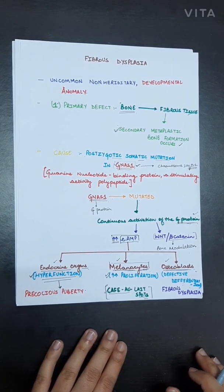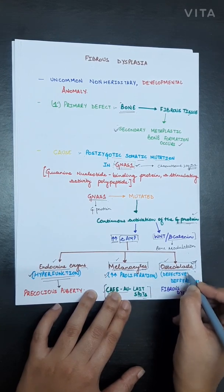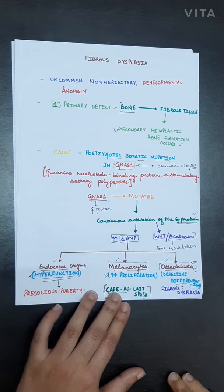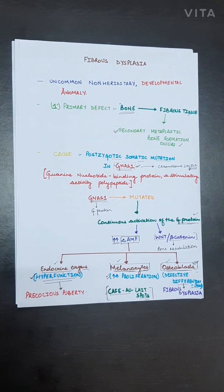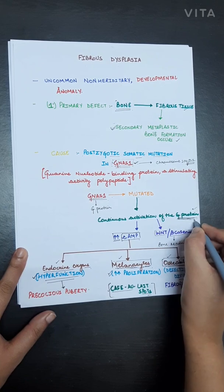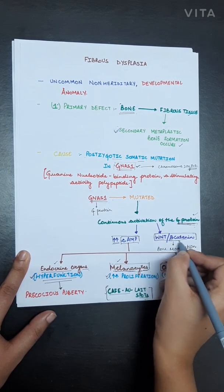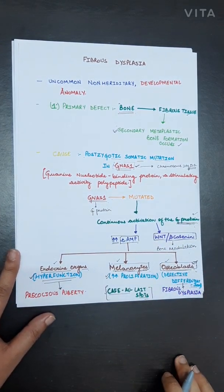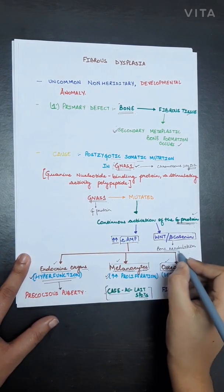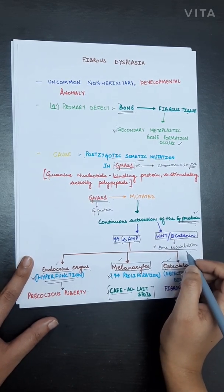Thirdly, there is an impact on osteoblasts. These osteoblasts show defective differentiation, which leads to the disease fibrous dysplasia. Additionally, due to continuous activation of G protein, it also affects the WNT or beta-catenin signaling pathway, which is involved in bone modulation.